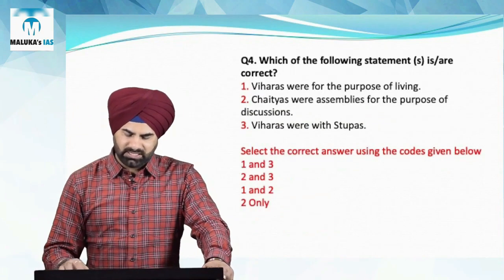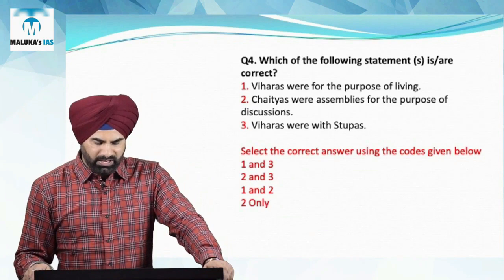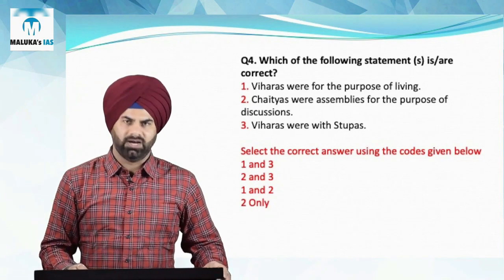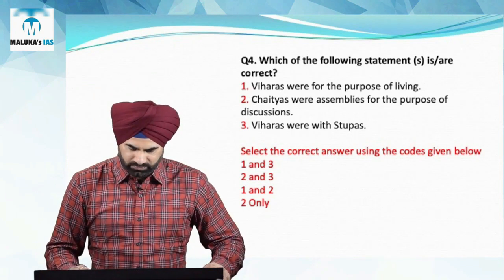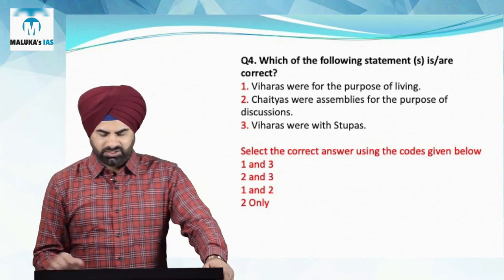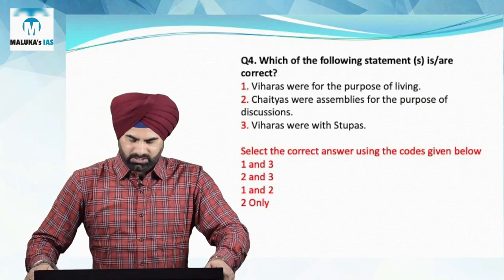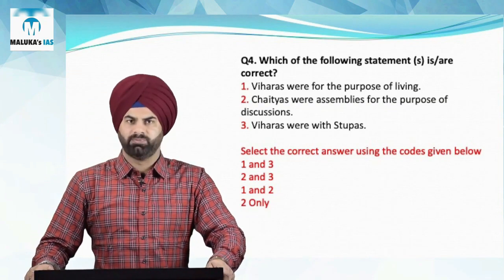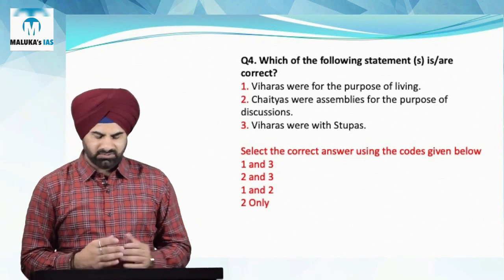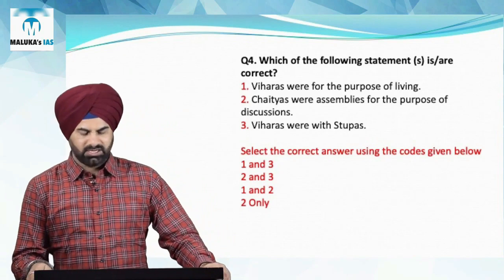Question number four: which of the following statements is correct? The first statement — Viharas were used for the purpose of living — is right; it was the monks who used Viharas for living. The second statement — Chaityas were assembly halls used for discussion — is also correct. The third statement — Viharas were with a stupa — is wrong; it is the Chaityas, not the Viharas, that were associated with stupas.